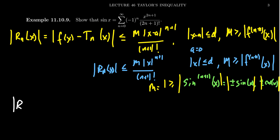So our remainder r_n of x will be bounded above by 1 times the absolute value of x to the n plus 1 over n plus 1 factorial. This is going to look like the absolute value of x to the n plus 1 over n plus 1 factorial.